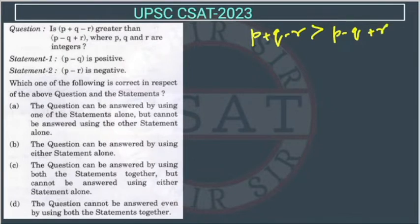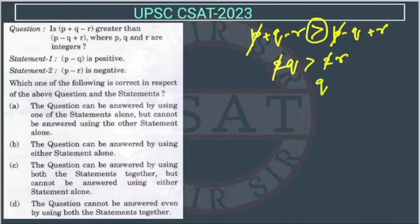So I told you how to solve this - just consider it as equal sign. Now solve it. The p will cut this p. This minus q will come this side, so this will become 2q greater than, and this r will go this side, so this will become r. So this question is asking is q greater than r.